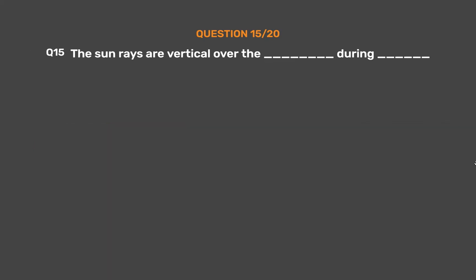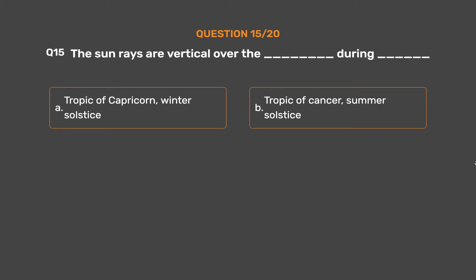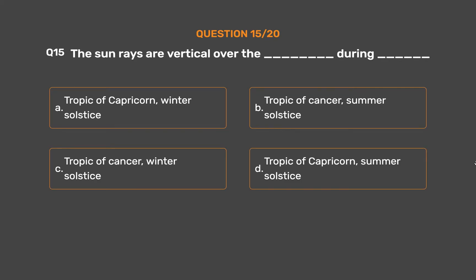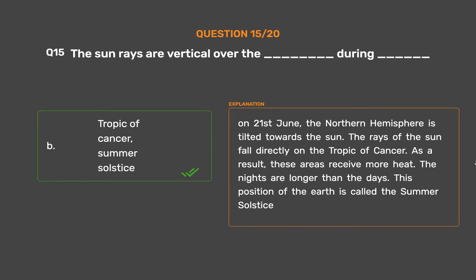Question number 15. The Sun's rays are vertical over the underscore during underscore. Option A: Tropic of Capricorn, winter solstice. Option B: Tropic of Cancer, summer solstice. Option C: Tropic of Cancer, winter solstice. Option D: Tropic of Capricorn, summer solstice. The correct answer is Option B: Tropic of Cancer, summer solstice. On 21st June, the Northern Hemisphere is tilted towards the Sun, and the rays fall directly on the Tropic of Cancer. These areas receive more heat, and this position is called the summer solstice.